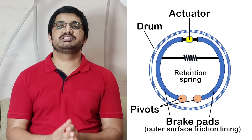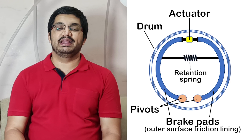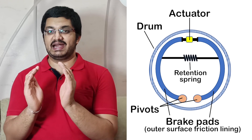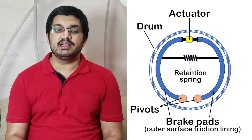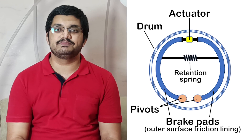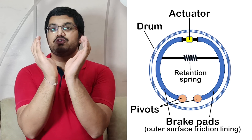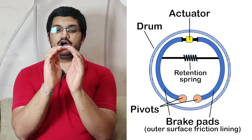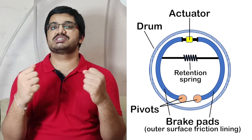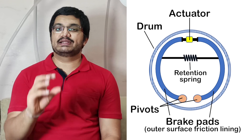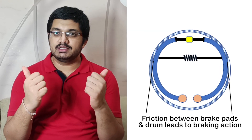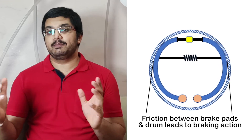In a drum brake, there is a drum rigidly attached to the wheels which rotates with it. Inside the drum, there are two semi-cylindrical shaped braking pads with friction lining on their outer surface. These pads are pivoted from the lower end so they can move along the pivot, and at the top end they have an actuator which pushes them outward. When the brake is applied, the actuator pushes the pads outside, causing them to rotate about the pivot and rub against the drum. The friction between the drum and the semi-cylindrical pads applies the braking force.